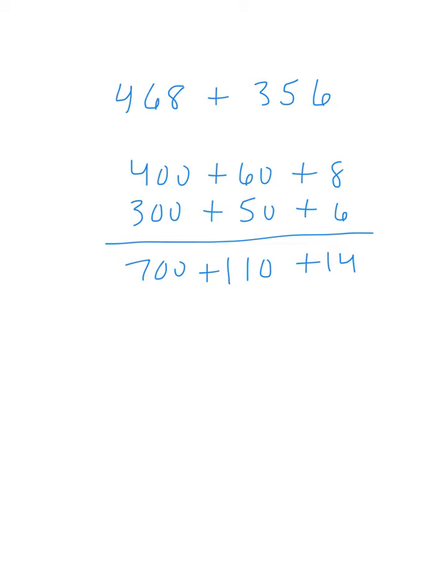So if we break this down, if we add 14 to 110, that would be 124—or we could just add 10 and 14 to get 24, plus 100 is 124, whichever way works for you. And then 700 plus 124 gives us an answer of 824.